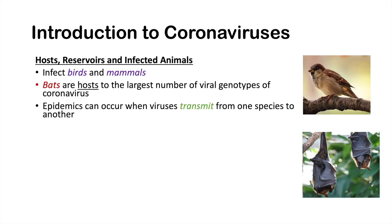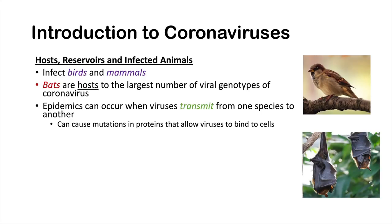Epidemics from coronaviruses generally occur when viruses are transmitted from one species to another. This is because the viruses can acquire or develop mutations in proteins on their envelope, allowing them to bind to and infect cells of other species more easily. This is why it is significant when a coronavirus is transmitted from one species to another.